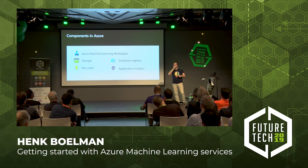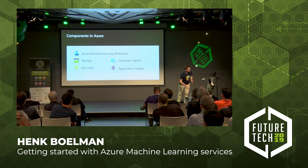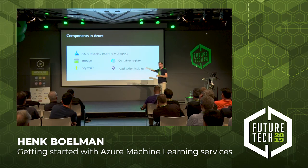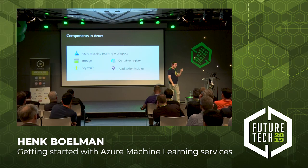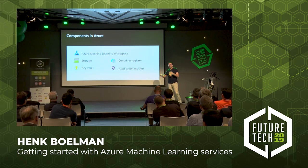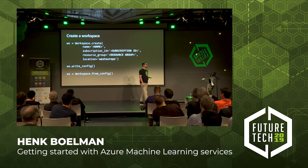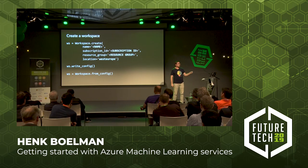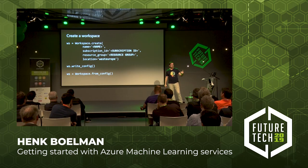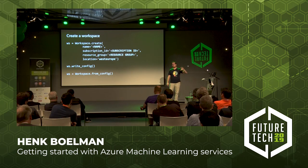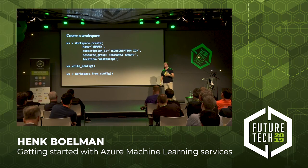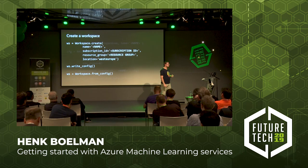Looking at the real Azure components you get: a workspace, a data store which is just a regular blob storage, a key vault with all your secrets, a container registry where all your Docker images are registered, and Application Insights for tracking experiments and reporting. Creating a workspace is just Python code: you create a workspace, give it a name, link it to your subscription, give it a resource group name, say create, write down the config, and later load your workspace from config — so you don't have to check in sensitive credentials.